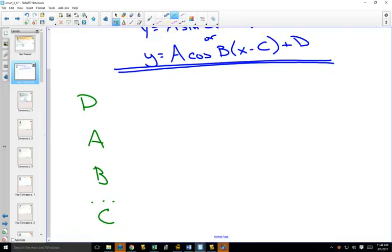So the D value is the first thing that you're going to do. You're going to look at your entire equation, and you're going to say, my D value is my center line. So the first thing you're going to do is label your sinusoidal axis.